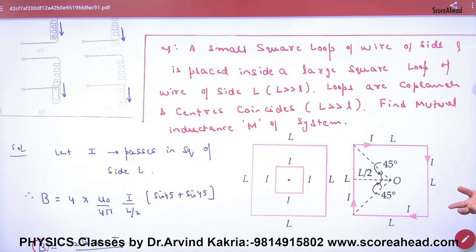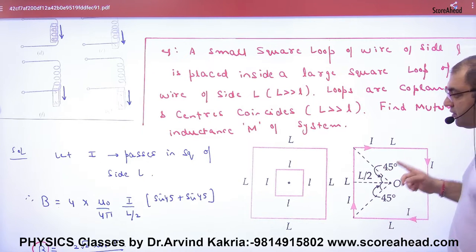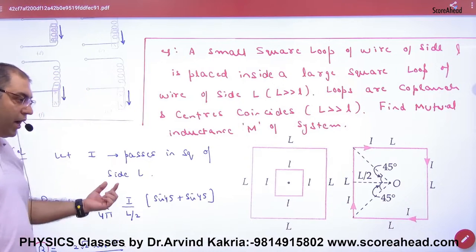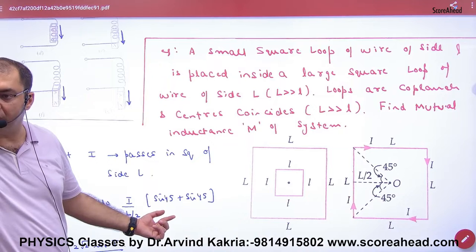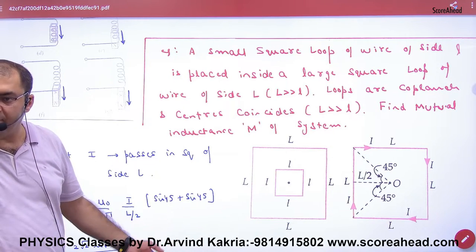Now the question is, in which do I pass current? The rule is pass current in whichever you want. I passed current in the outer one. The outer loop, where I pass current, will generate B at its center, and the small coil will also use it. How much B will the big coil generate? Using Biot-Savart law, this wire makes two angles 45, 45. From this wire: μ₀/4π i/L/2 sin45 plus sin45. How many wires are there? Four. Multiply by four. This B is generated by the large loop.